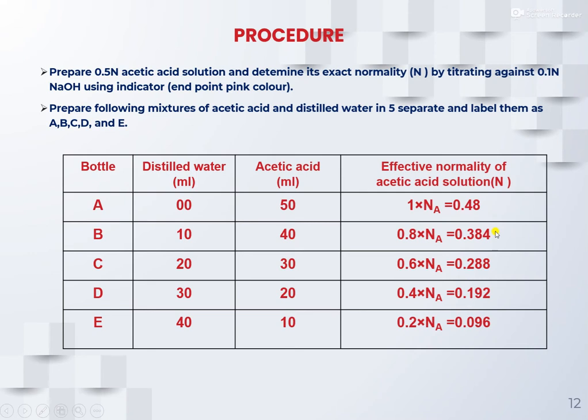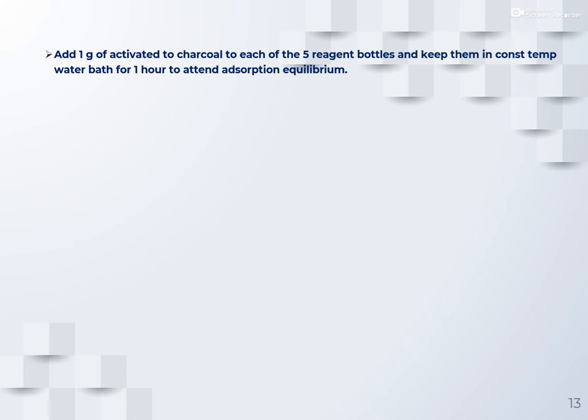For the first solution, multiply by 0.8 because among 50 ml only 40 ml is acetic acid, so 40 divided by 50 is 0.8. Similarly, 30 divided by 50 is 0.6, and so on for each bottle. After adding the solutions, add 1 gram of activated charcoal to each of the five reagent bottles and keep them in a constant temperature bath for one hour to attain adsorption equilibrium.